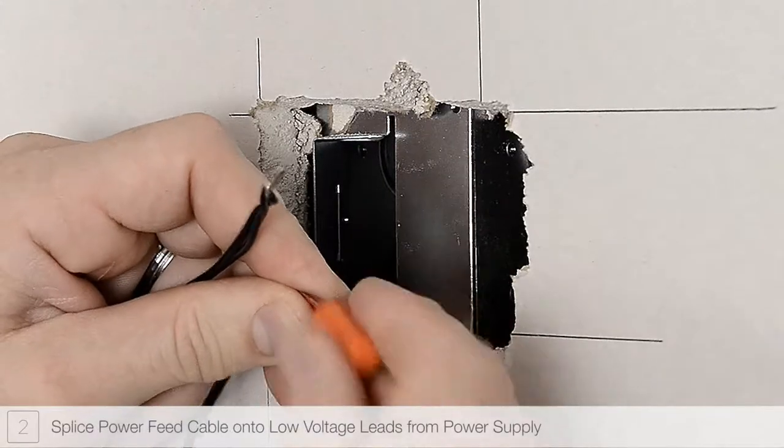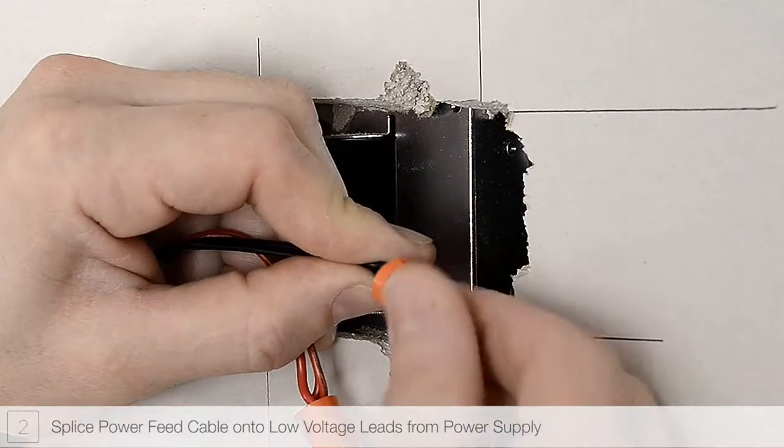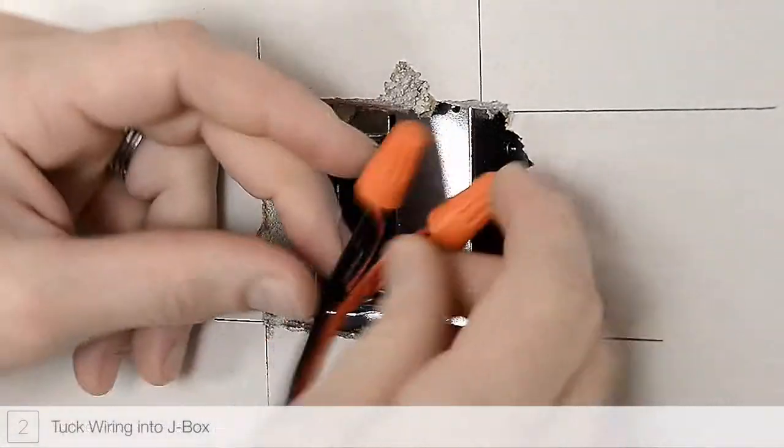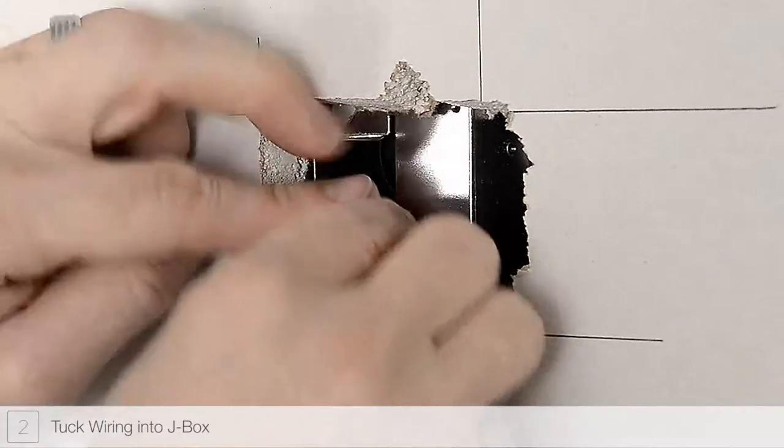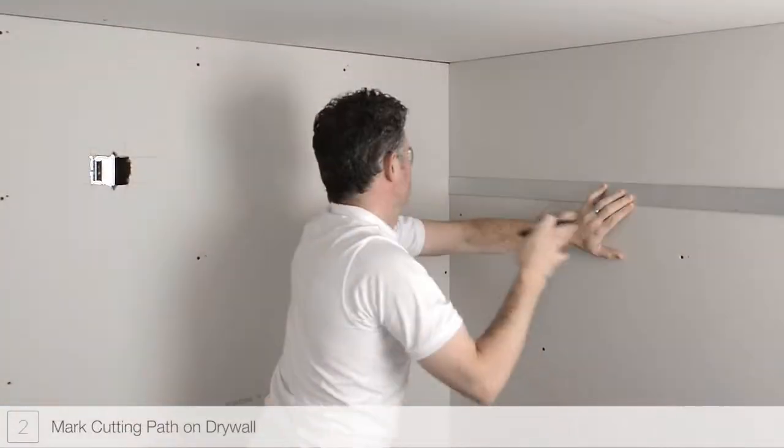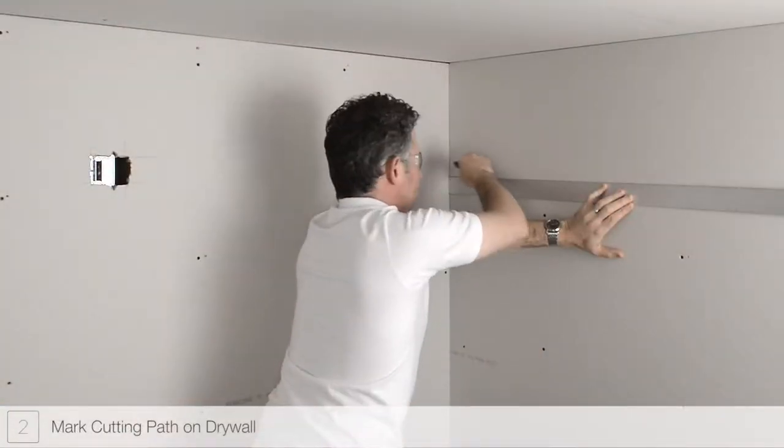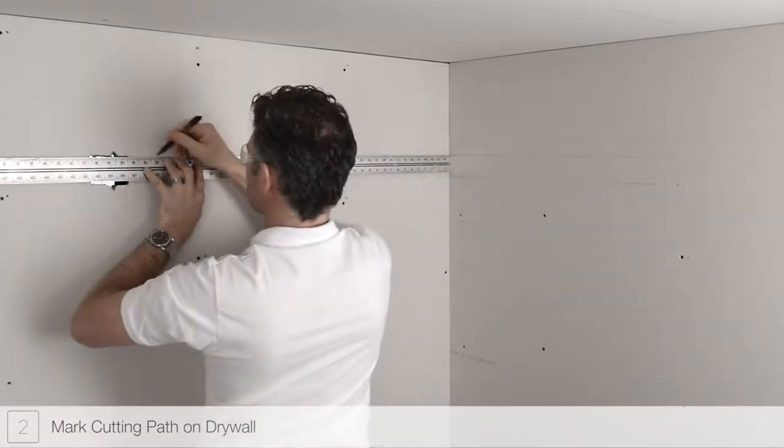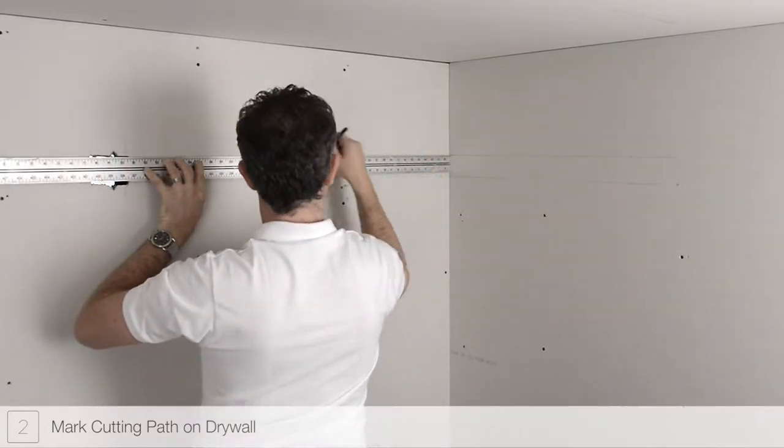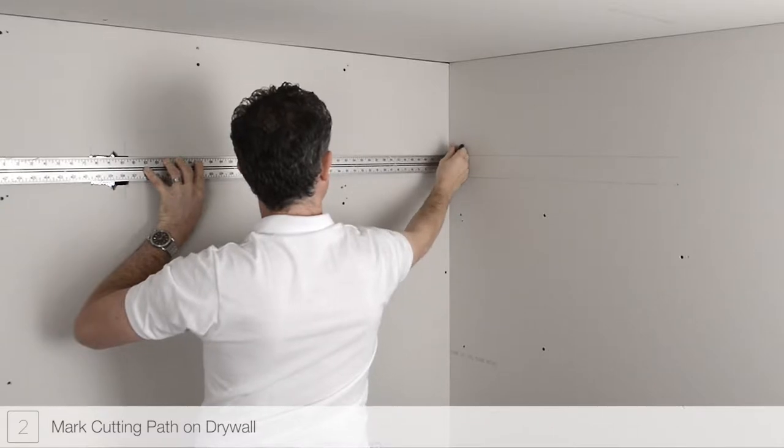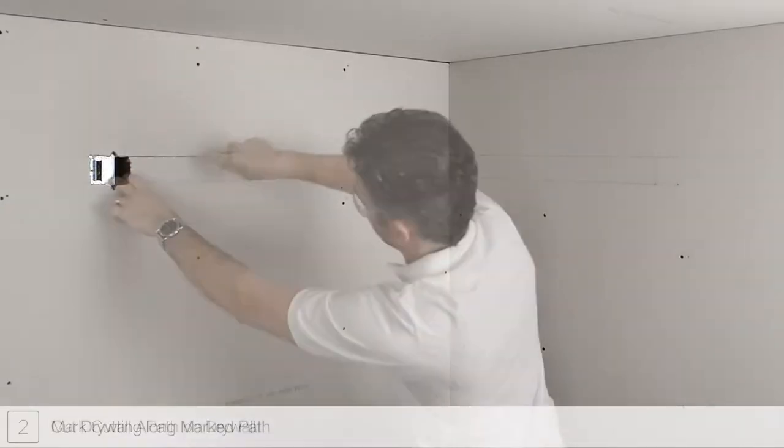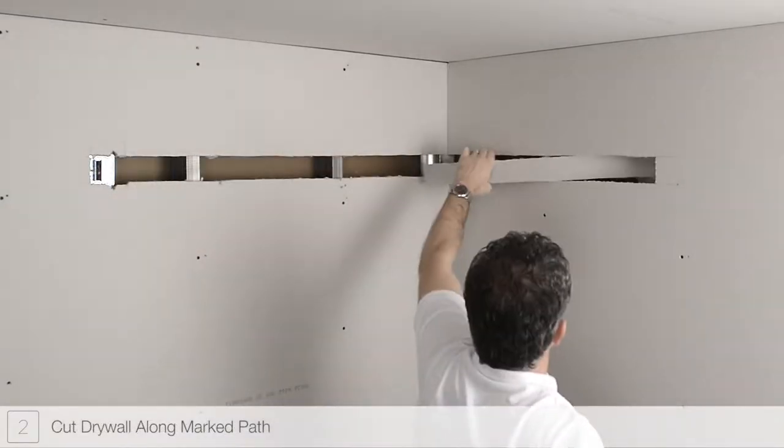Splice the included power feed cable to the low-voltage power wires. Place all electrical connections into the junction box. Using the drywall opening as reference, mark 2 1/4 inch wide lines the complete length of the channel along the drywall. Cut the drywall using a jab saw or other appropriate tool.